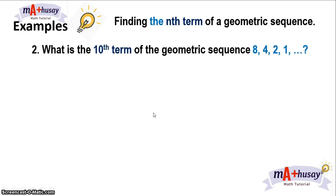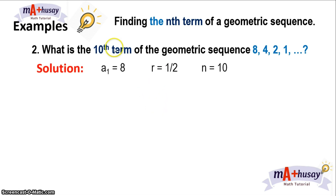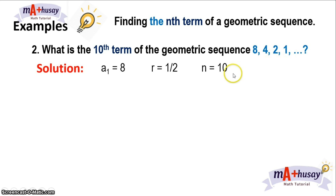Example number 2: What is the 10th term of the geometric sequence 8, 4, 2, 1, and so on? To solve this, a sub 1 is 8. The common ratio is 1/2 because if you multiply 1/2 to 8 you get 4, 1/2 of 4 is 2, and 1/2 of 2 is 1. So our common ratio is 1/2.